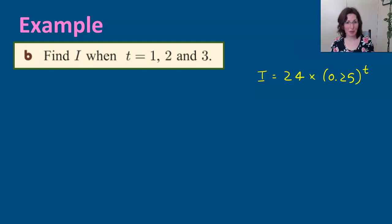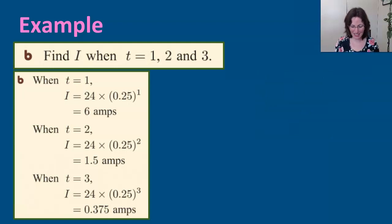When you're asked to solve for capital I for these different t values—t = 1, 2, and 3—what we're going to do is substitute in the different values of t. When t = 1, I = 24 × 0.25^1 = 6 amps. When t = 2, I = 24 × 0.25^2 = 1.5 amps. And when t = 3, I = 24 × 0.25^3 = 0.375 amps.